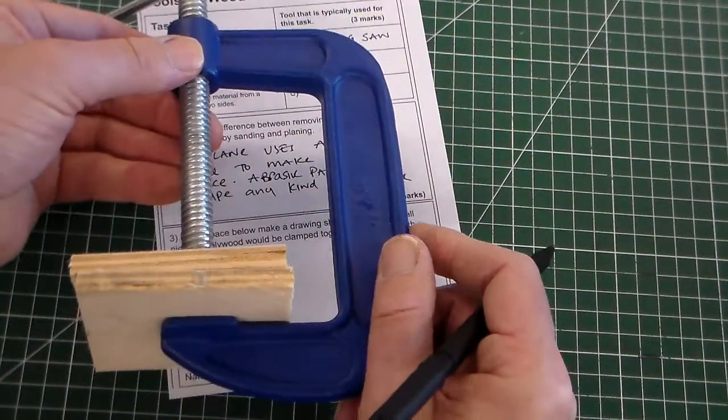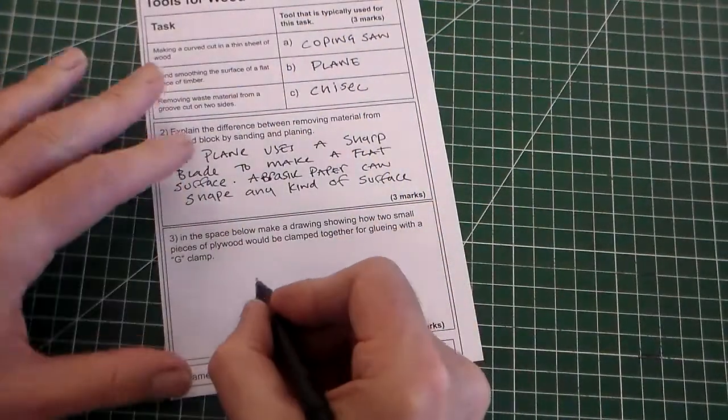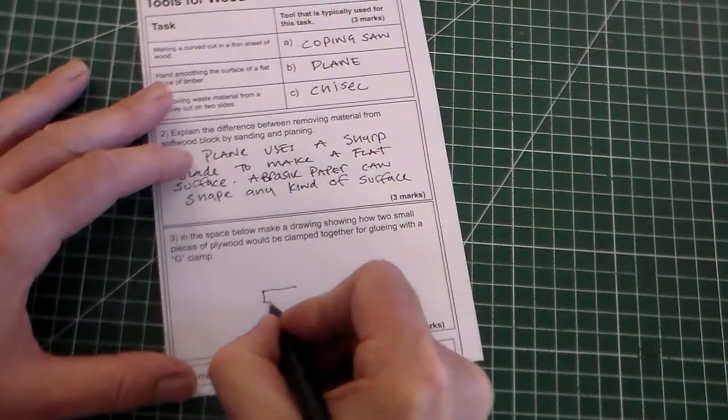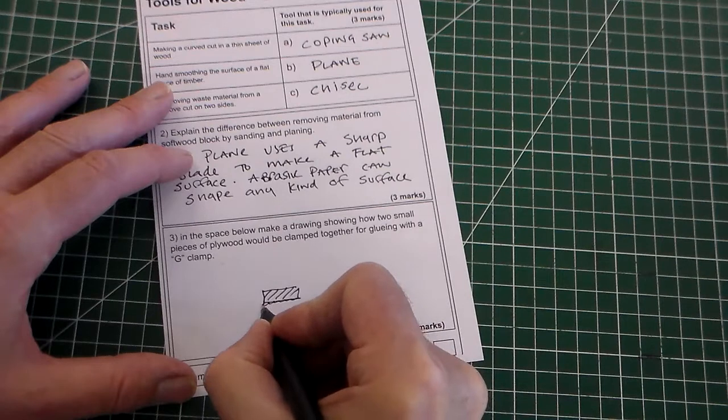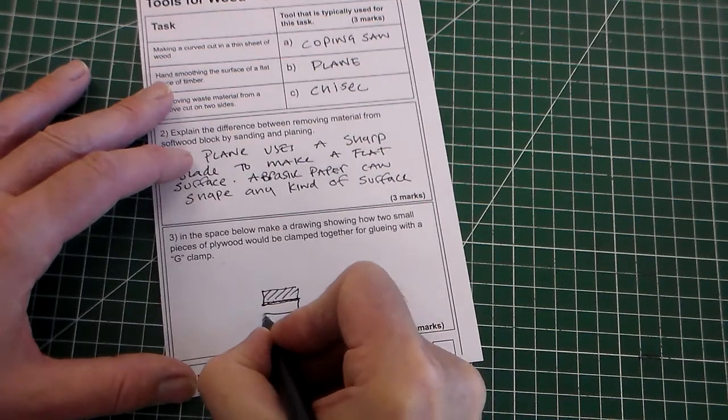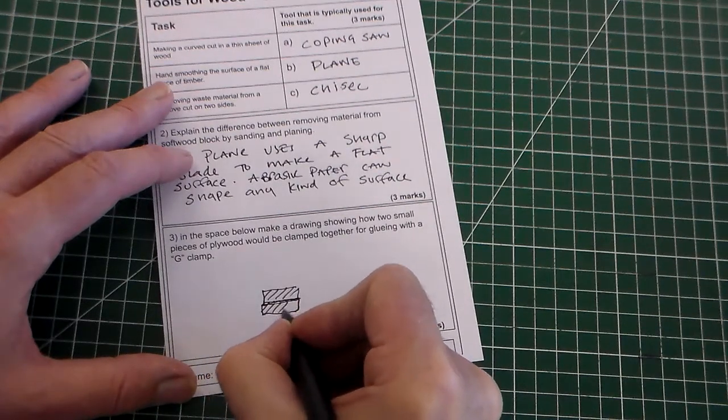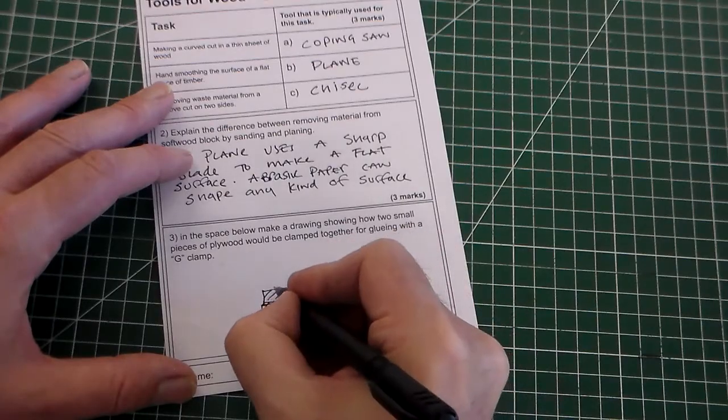So what we've got to draw is that. If we draw our two pieces of wood, we could just put a line there, maybe put a glue in here. In exams, quite often little drawings like this are handy.